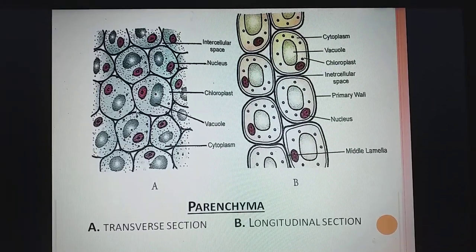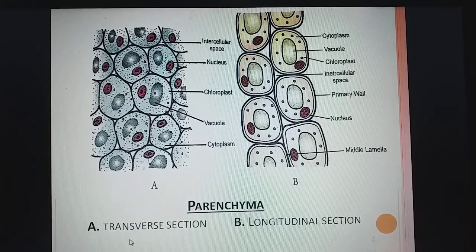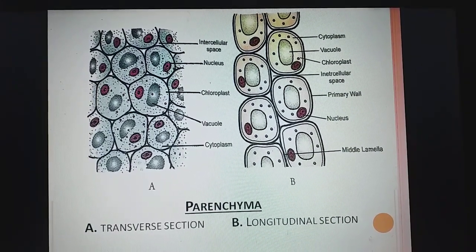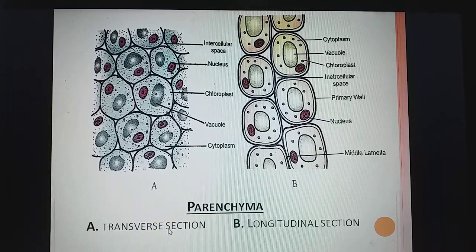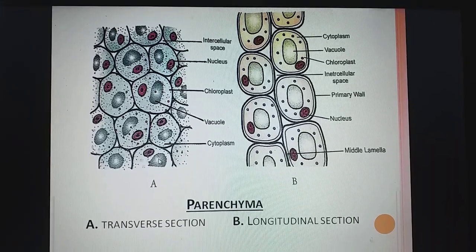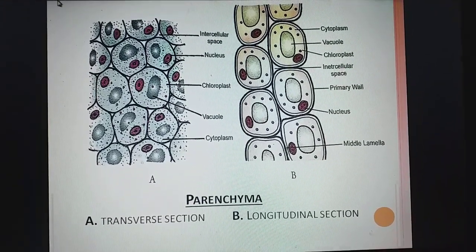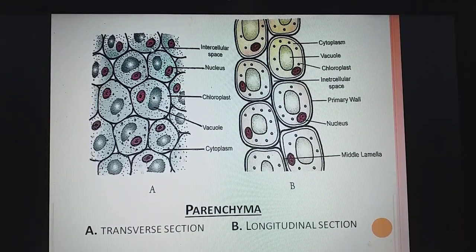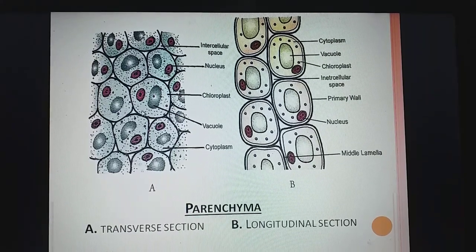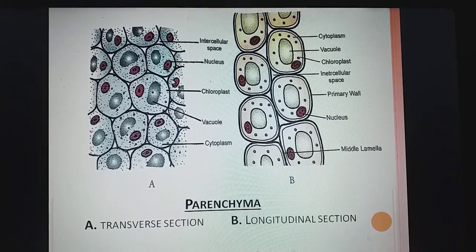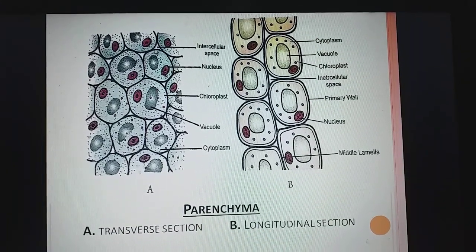With this diagram it will be more clear. Two diagrams are given of the same tissue — one is a transverse section and another is a longitudinal section. Transverse section means the tissue is cut horizontally, and longitudinal means it is cut vertically. In the diagram you can see intercellular space present between the cells, chloroplast is present, and vacuoles are there — the same organelles present in a plant cell. The main feature is the intercellular space between the cells.